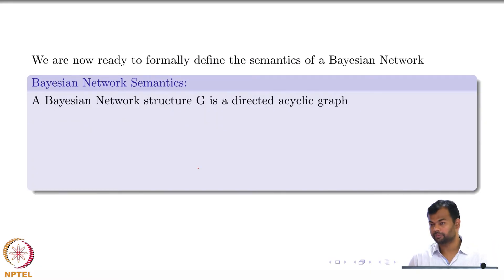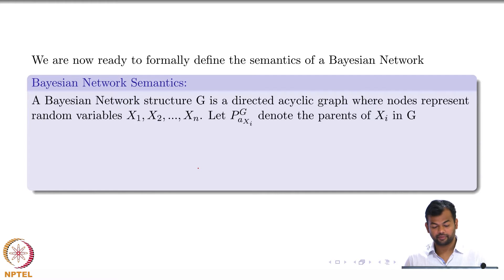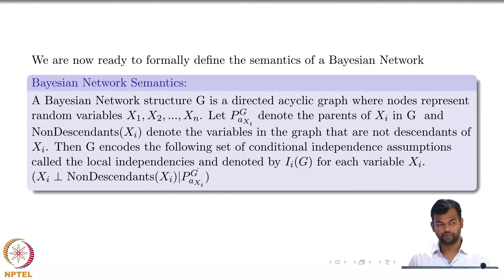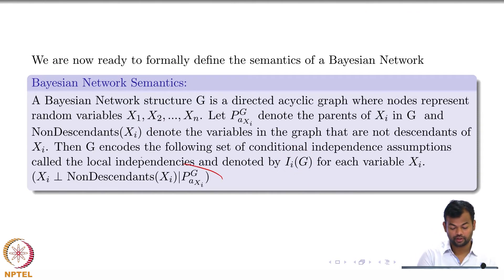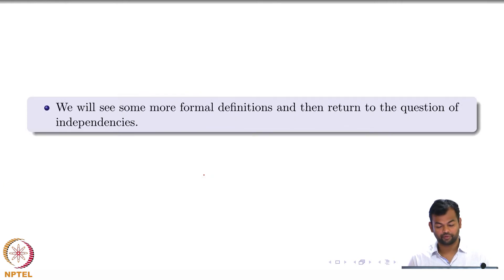Yesterday we were talking about Bayesian networks and we saw they are directed acyclic graphs where the nodes represent random variables and the edges indicate dependence. We came up with this rule which the Bayesian network encodes: for any given random variable, it is independent of its non-descendants given its parents. That is the rule that we came up with.